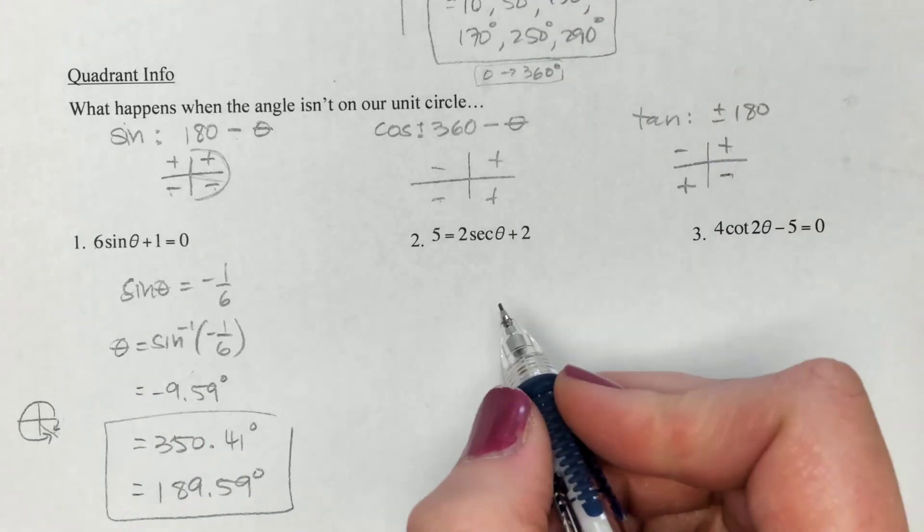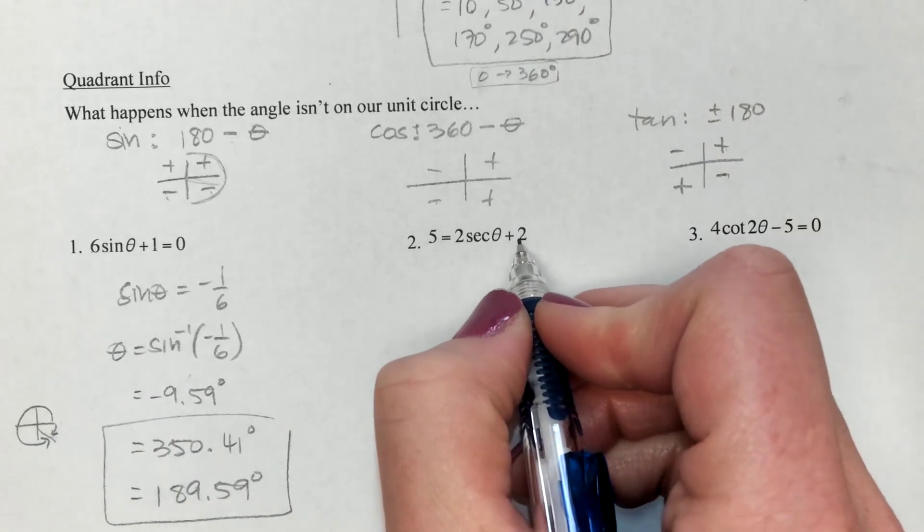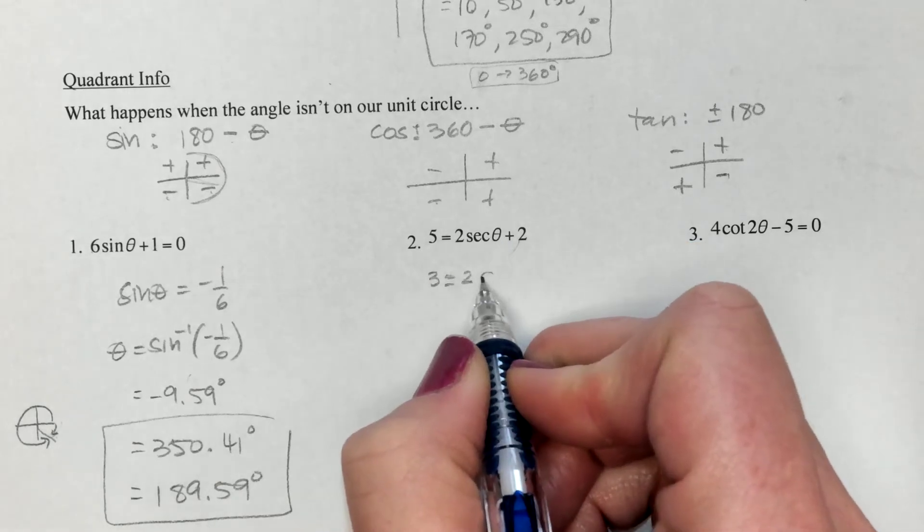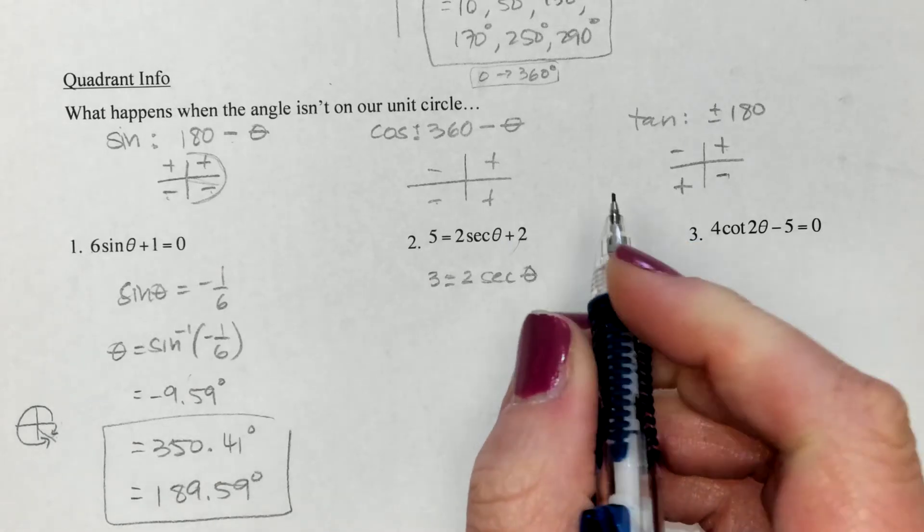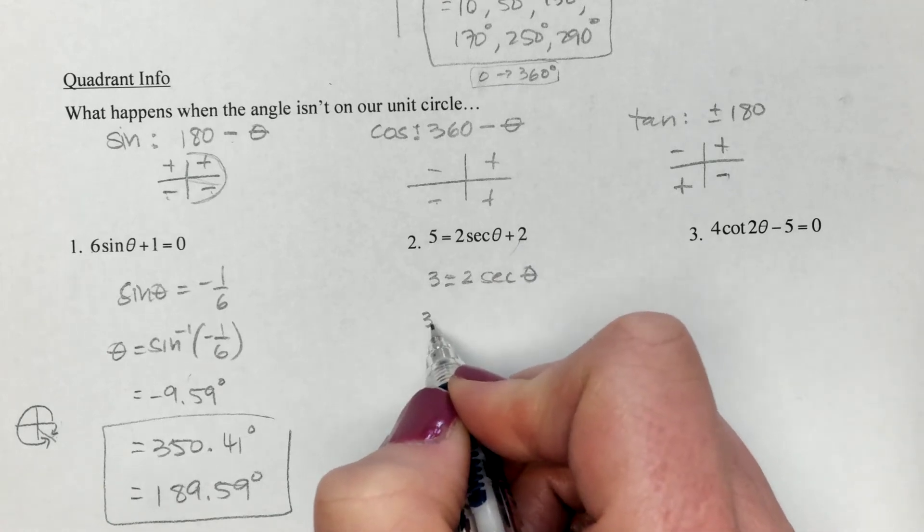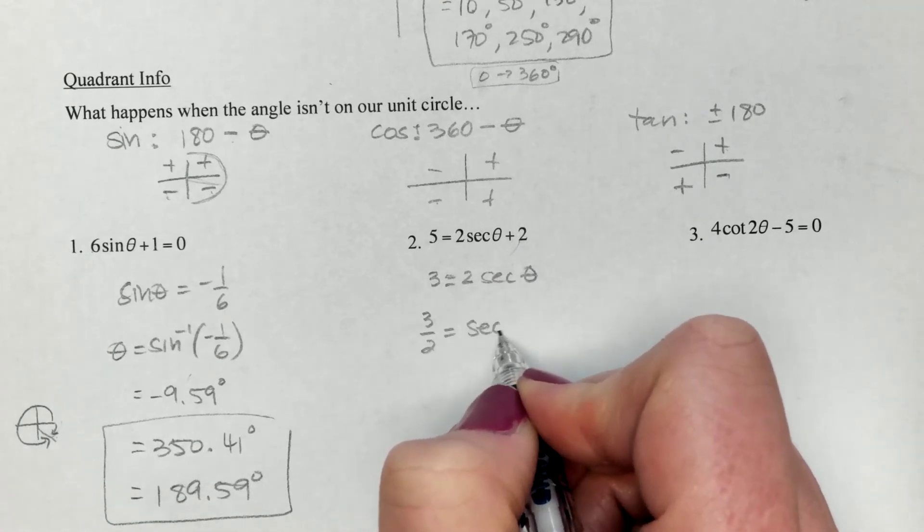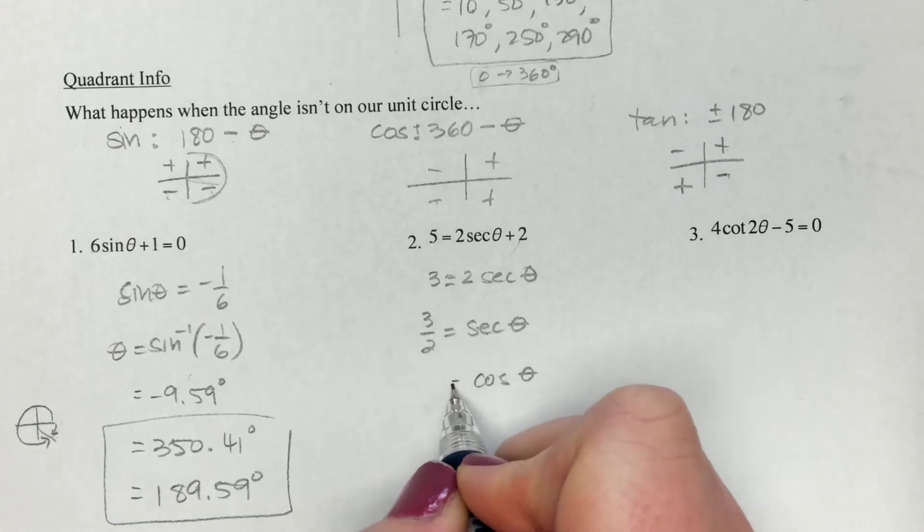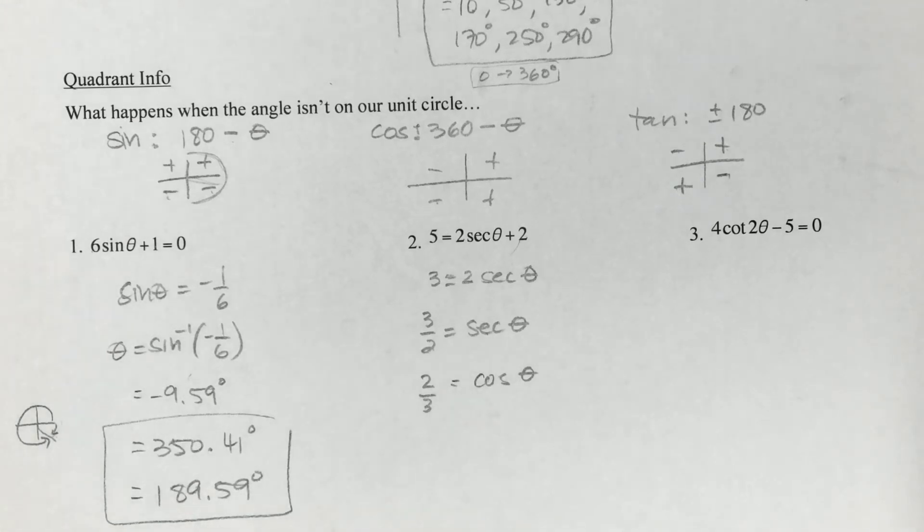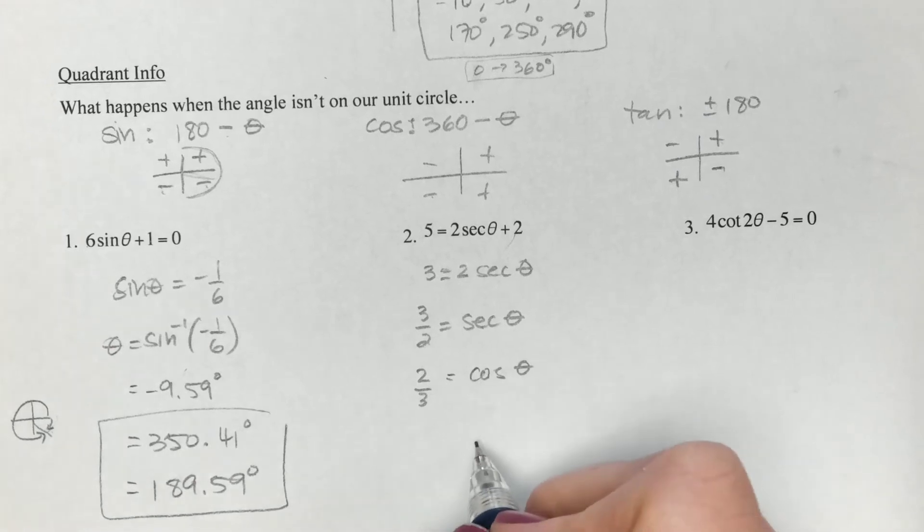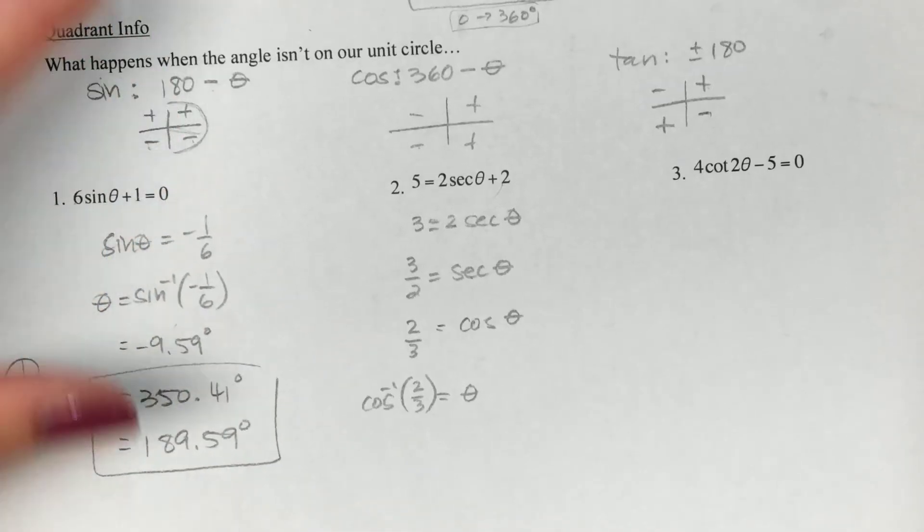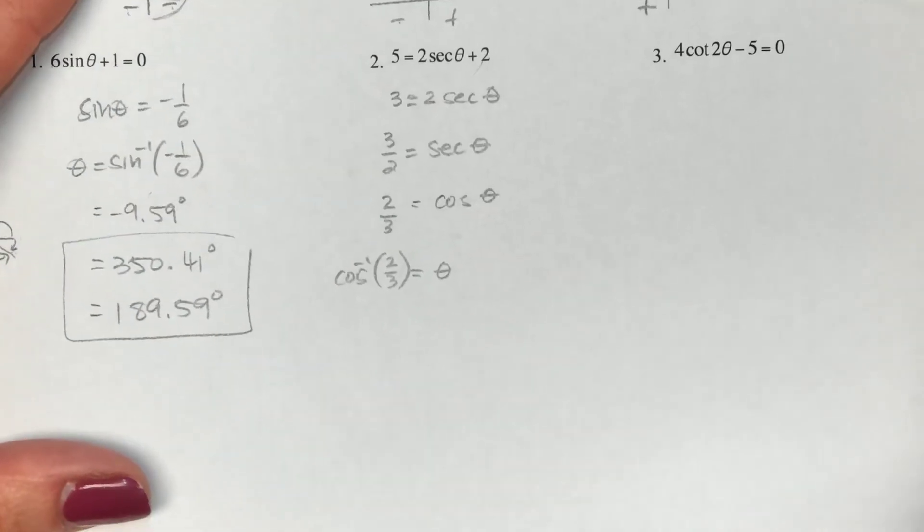Next up, we've got a secant. Well, we know that's related to cosine. Let's subtract that 2 over. We'll end up with 3. Then we'll divide by 2, so we'll end up with 3/2. Then we'll flip secant to become cosine, which will flip this to be 2/3. Now we're going to do what angles have a cosine of 2/3. Again, not on my unit circle. I'm going to grab our calculator.